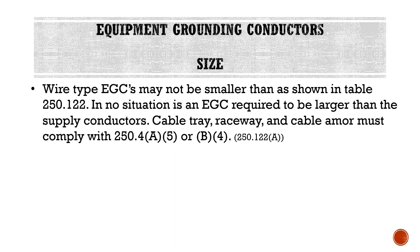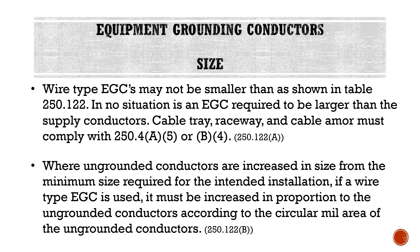Moving on to the size of equipment grounding conductors, wire-type equipment grounding conductors may not be smaller than shown in Table 250.122. In no situation is an equipment grounding conductor required to be larger than the supply conductors or the ungrounded conductors. Cable tray, raceway, and cable armor must comply with 250.4 A5 or B4. The main takeaways are: size EGCs using Table 250.122, and they never have to be larger than the ungrounded conductors.